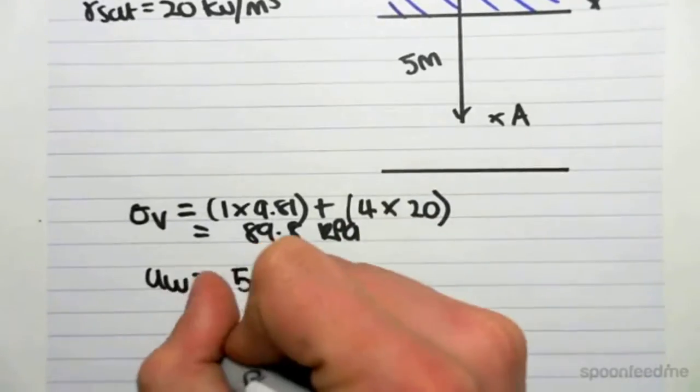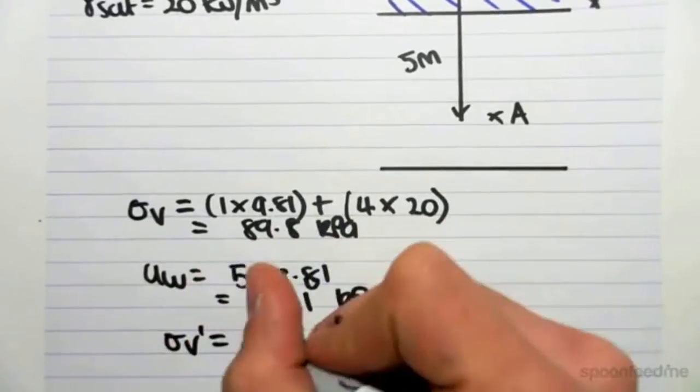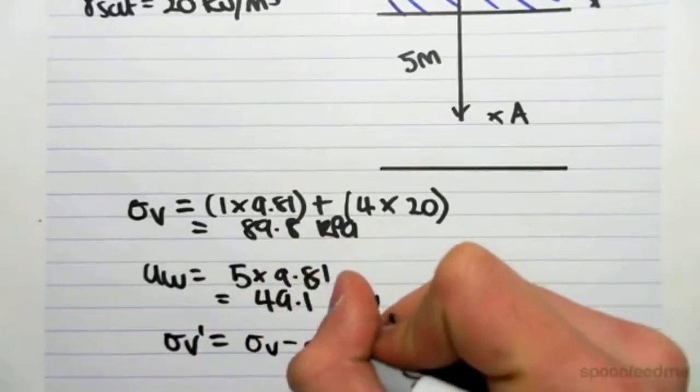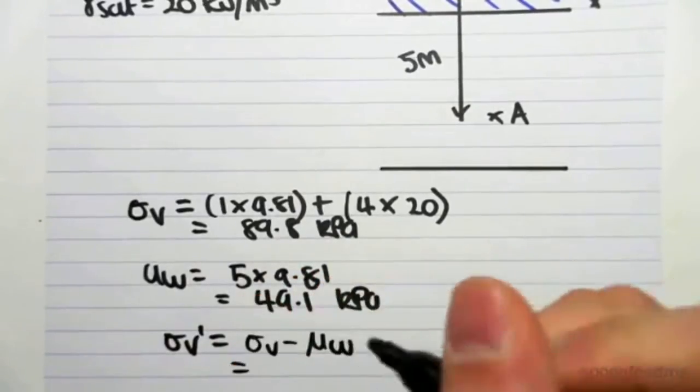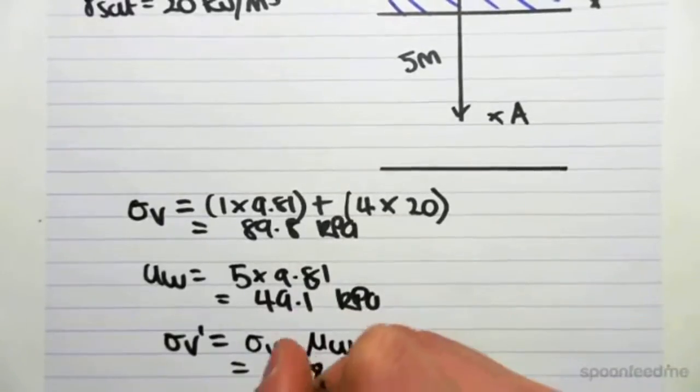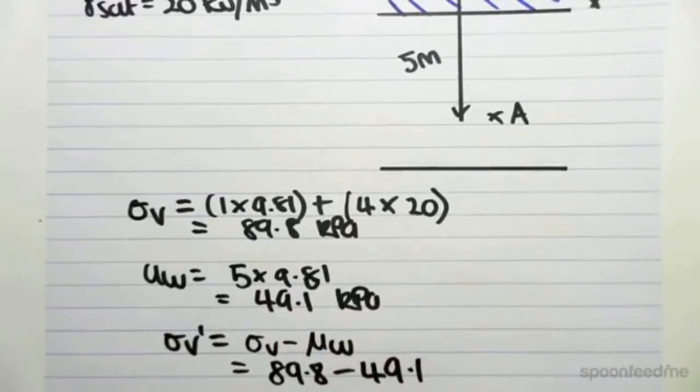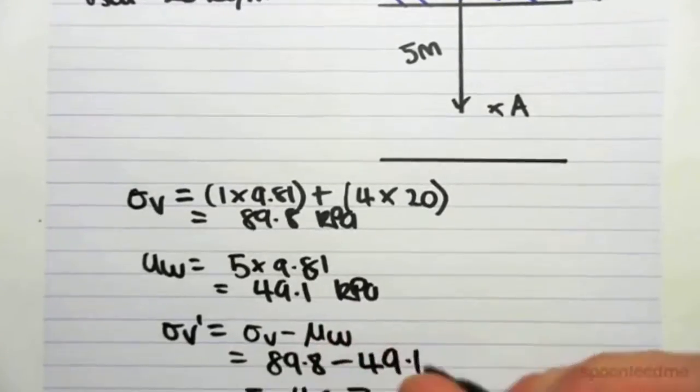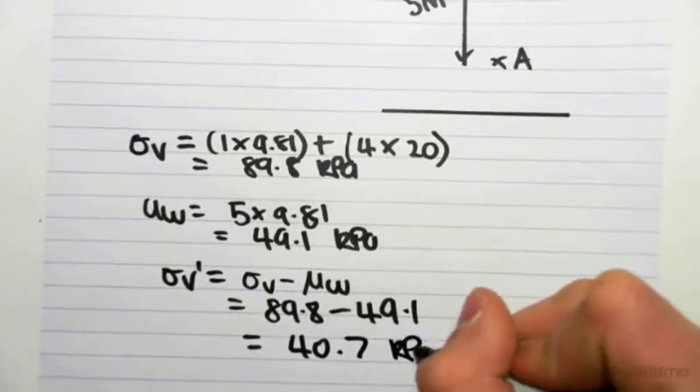which means that the effective stress will equal sigma v minus the pore water pressure, which is 89.8 minus 49.1. So 89.8 minus 49.1, we get 40.7 kPa.